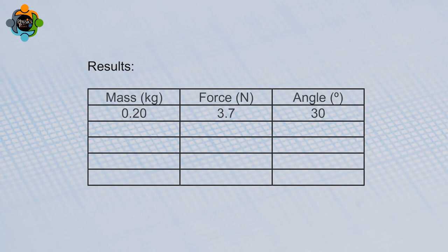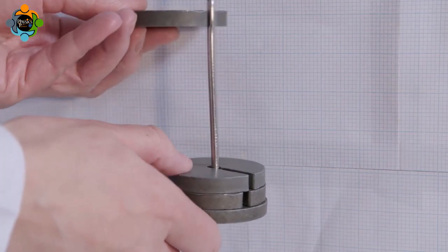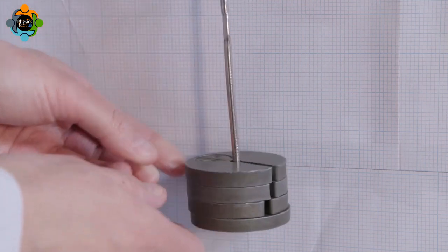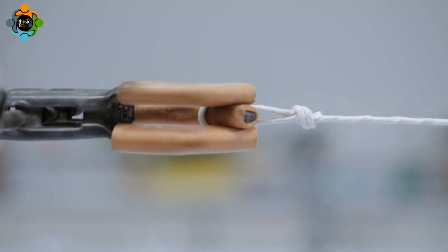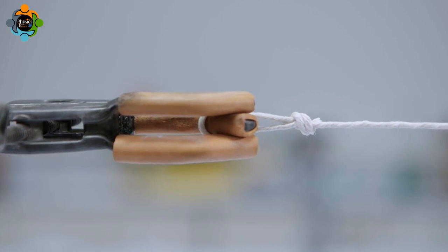Mass is now added to the mass hanger. The horizontal string will have to be adjusted for the new mass so it remains horizontal.